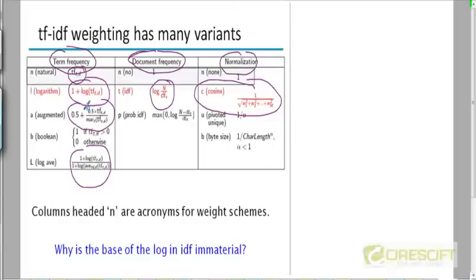So if we denote each of these schemes by an alphabetical letter, then we can say that ATC is the scheme that we are using. That means we are using the augmented variant of term frequency weighting. We are combining it with the T variant of the document frequency weighting and we are combining it with the C variant of the normalization.